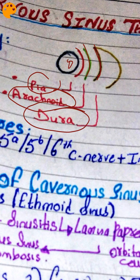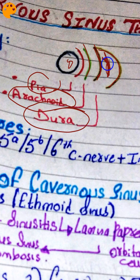The inner layer is called the meningeal layer of dura mater, and the outer layer is called the periosteal layer of dura mater. In between these two layers there is a space in which the dural venous sinus is located. The cavernous sinus is one of the dural venous sinuses, located between the two layers of dura mater.